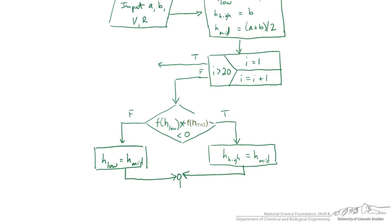And regardless of both those pathways, there's one more thing that we need to do. And that's to redefine the new h mid, which is just the average of low and high. So now we've redefined that. This is a single iteration of the bisection method.